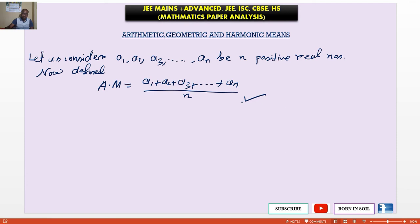Next we define geometric mean. Geometric mean of this number is similarly defined by in short form GM which is equal to product of the numbers a1, a2, a3, a4 dot dot an to the power 1 by n.